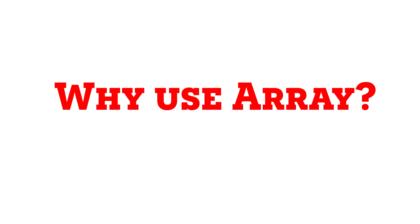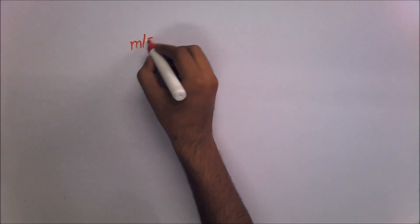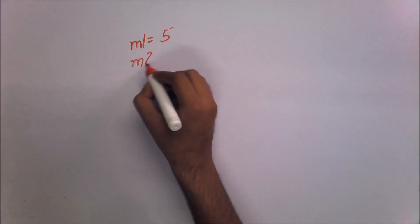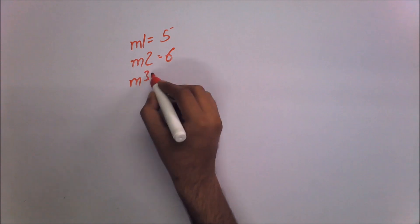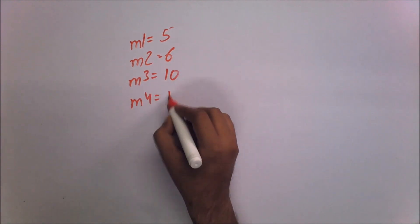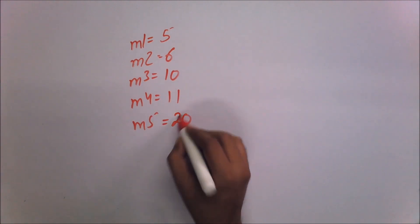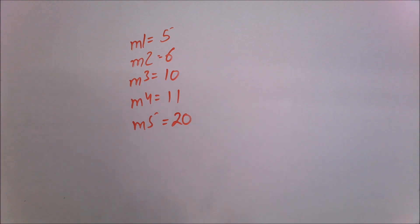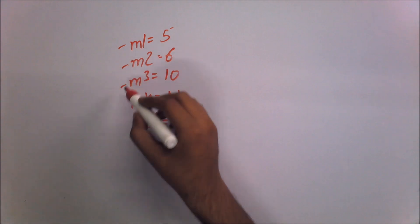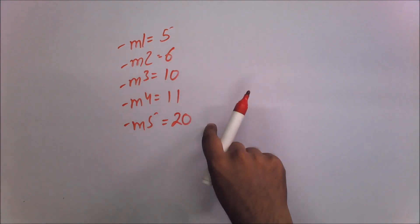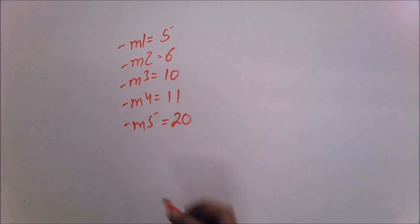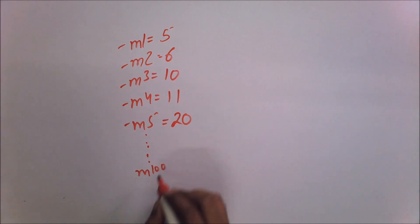Why is the use of array so important, and where must we use it? For understanding this, consider this example: if you want to save the marks of a student in five subjects, you must take five variables — m1 = 5, m2 = 6, m3 = 10, m4 = 11, m5 = 20. We are taking five variables for only 5 marks. But what if we had to take 100 marks? Then we would need 100 variables.